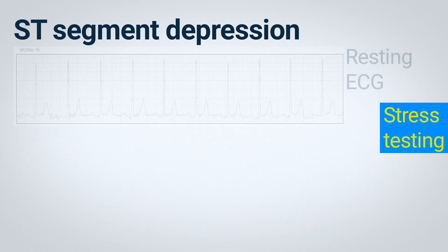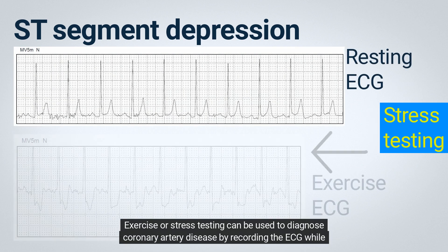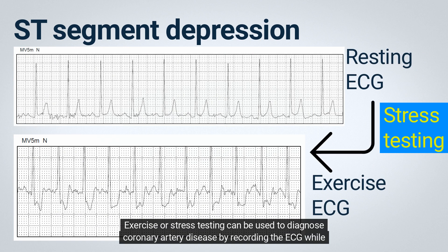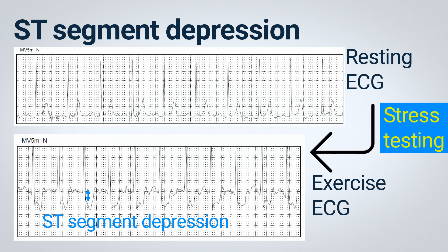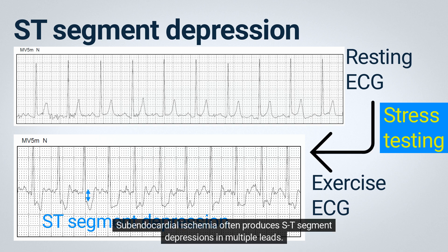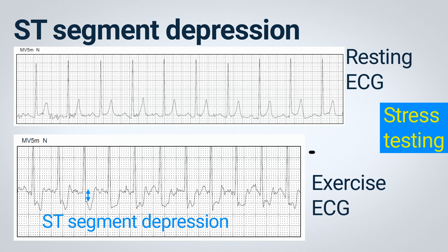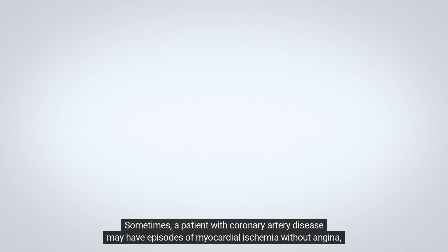Exercise or stress testing can be used to diagnose coronary artery disease by recording the ECG while the patient is being exercised under controlled conditions. Subendocardial ischemia often produces ST segment depressions in multiple leads.